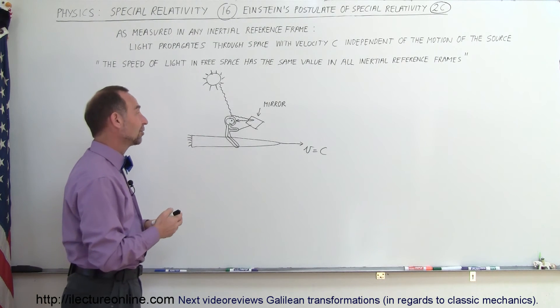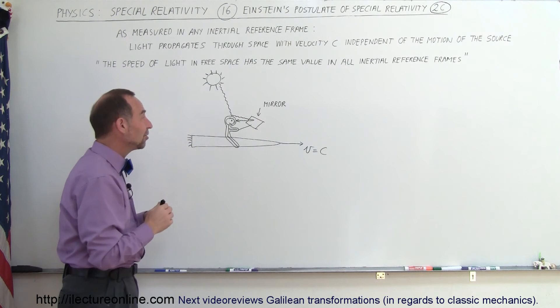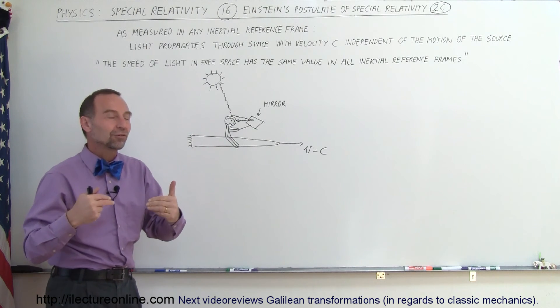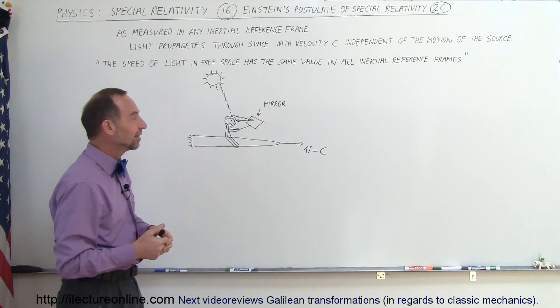And of course, that was a big controversy. And it turns out that, yes indeed, now we realize that you would see your image in the mirror because this postulate is correct. No matter what reference frame you're in, the light will always appear to be traveling at the speed of light. An amazing thing.